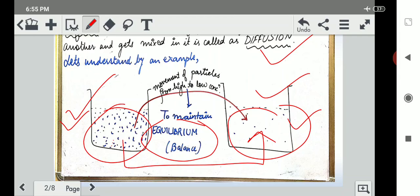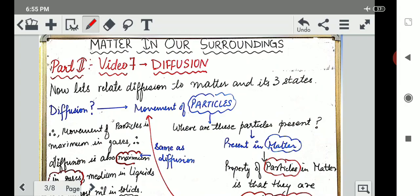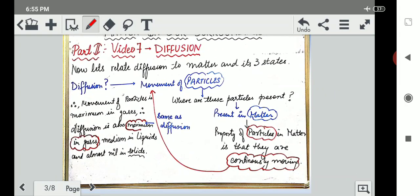So I hope you are clear with the basis of diffusion. Now let's relate diffusion to matter in its three states. What was our topic which we are studying? Matter in our surroundings. So now how will we relate these two topics, diffusion and matter? Diffusion is the movement of particles, that means how the particles move from region where they are present in high amount to the region where they are present in low amount to maintain balance.